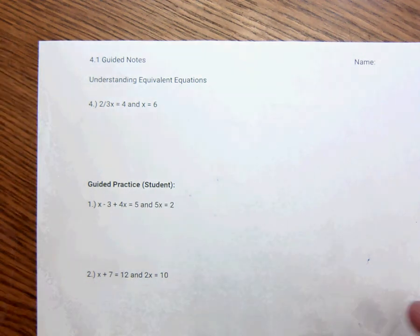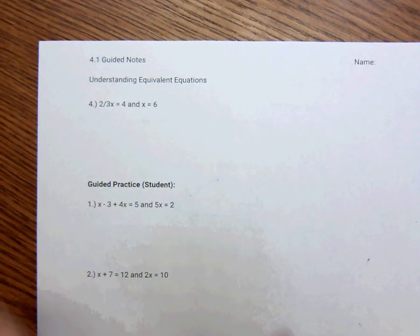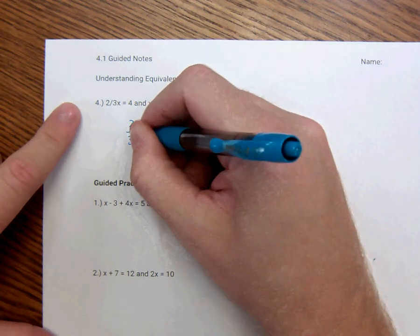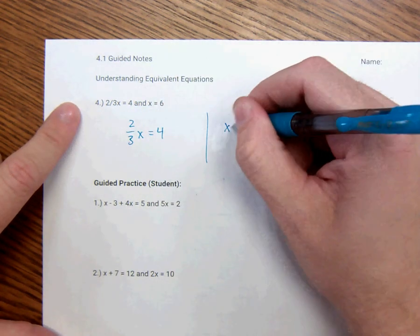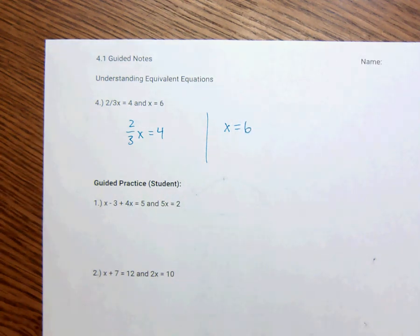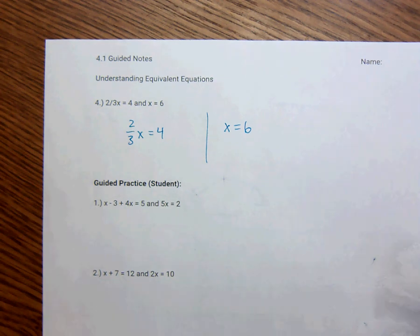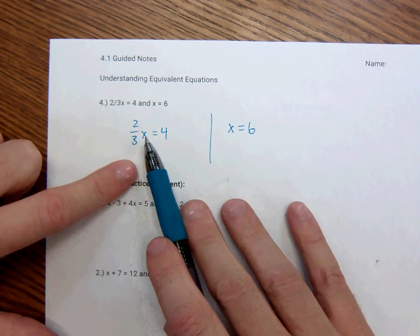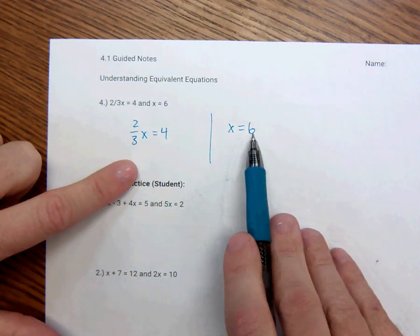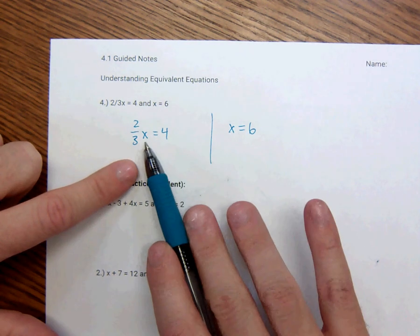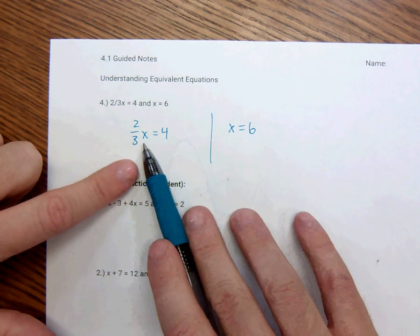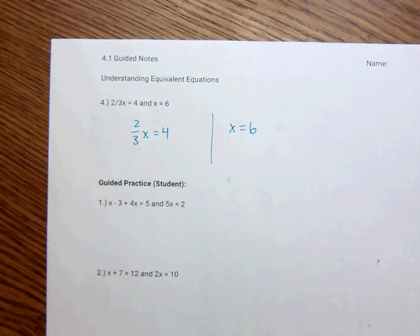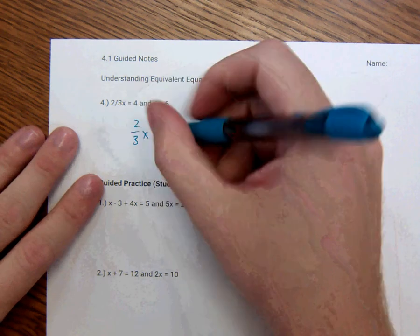So here I'm going to solve this one. I have 2 thirds x equals 4. This one I just have x is equal to 6. So we're going to decide whether or not they're the same equation. Now there's a host of different ways to do this. I'm actually going to go about 2, I think. One of them is to try and get x alone here. The other is to, if x is equal to 6, this x has to equal 6. If you were to plug 6 in for this x, if it's true, if 2 thirds times 6 is equal to 4, then they have the same solution.